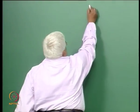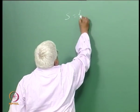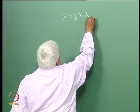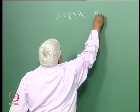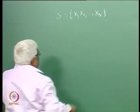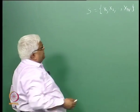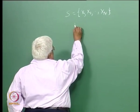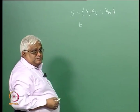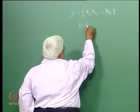We have a set of features S. B is the number of features that is to be chosen, and naturally B is less than N.